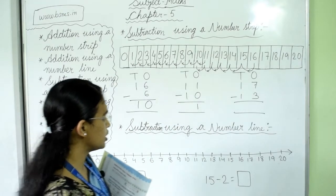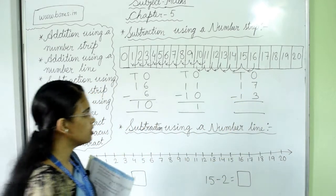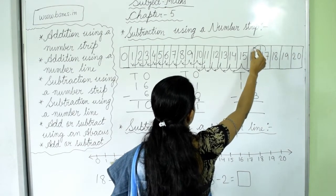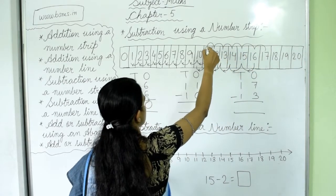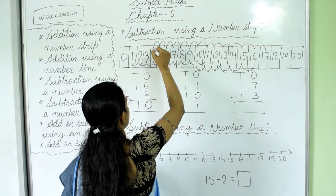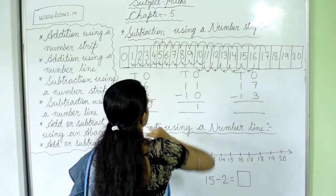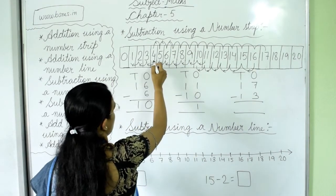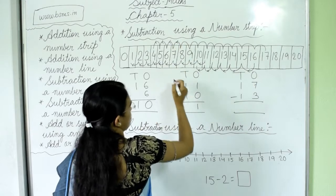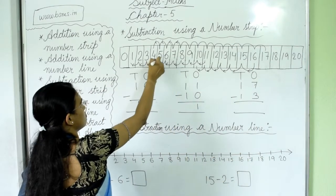Next question is 17 minus 13. Where is 17? It is here. We take 13 back steps: 1, 2, 3, 4, 5, 6, 7, 8, 9, 10, 11, 12, 13. We reach number 4. So 17 minus 13 equals 4.